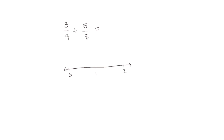We start with fourths to plot our first fraction, 3 fourths. To go forward 5 eighths, we decompose by dividing each fourth in half so that we have 8 total divisions between 0 and 2. Starting at 3 fourths, we move forward 5 eighths: 1, 2, 3, 4, 5. We end up at 11 eighths, or 1 and 3 eighths. So 3 fourths plus 5 eighths equals 1 and 3 eighths.